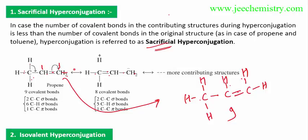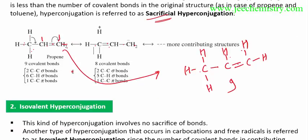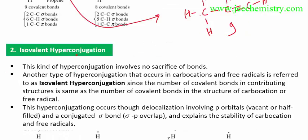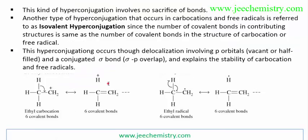The original number of covalent bonds in the original compound is the same as in the contributing structures. This is the other type of hyperconjugation — isovalent hyperconjugation. It generally occurs in free radicals and carbocations, where the number of covalent bonds are the same in the original structure and the contributing structures.